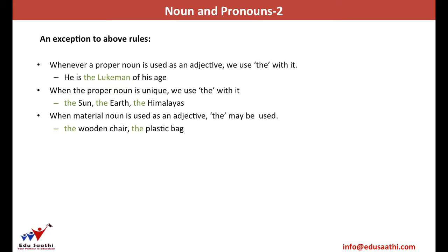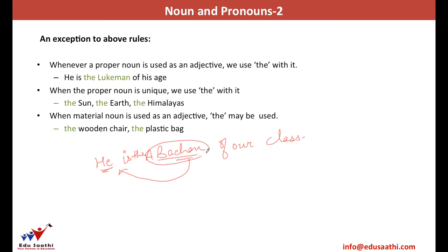We have certain exceptions to these rules. For example, if somebody's name is being used as an adjective, we can use 'the' in front of the name. For example, 'He is the Amitabh Bachchan of our class' — here I am comparing this person to Amitabh Bachchan based on acting skills or personality, so I am using it as an adjective and I write 'the'. Likewise, names that are unique or of heavenly bodies take 'the': the sun, the earth, and the Himalayas.